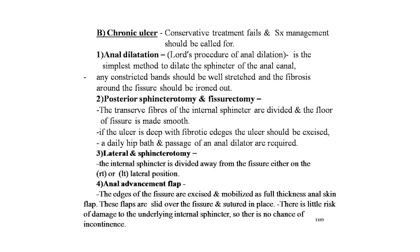The second procedure is posterior sphincterotomy and fissurectomy, where the transverse fibers of the internal sphincters are divided and the floor of the fissure is made smooth. If the ulcer is deep with fibrotic edges, the ulcer should be excised, followed by daily hip baths and passage of an anal dilator. Third is lateral sphincterotomy, where the internal sphincter is divided away from the fissure on either the right or left lateral position. Fourth is anal advancement flap, where the edges of the fissure are excised and mobilized as a full-thickness anal skin flap, which is slid over the fissure and sutured in place, with little risk of damage to the underlying internal sphincters and no chance of incontinence.